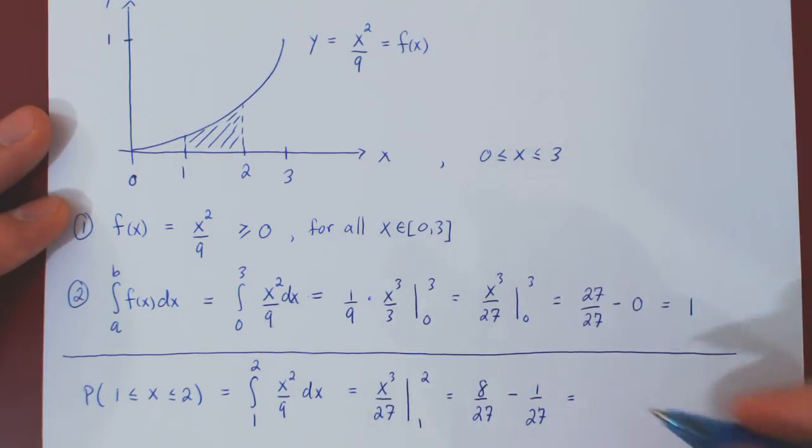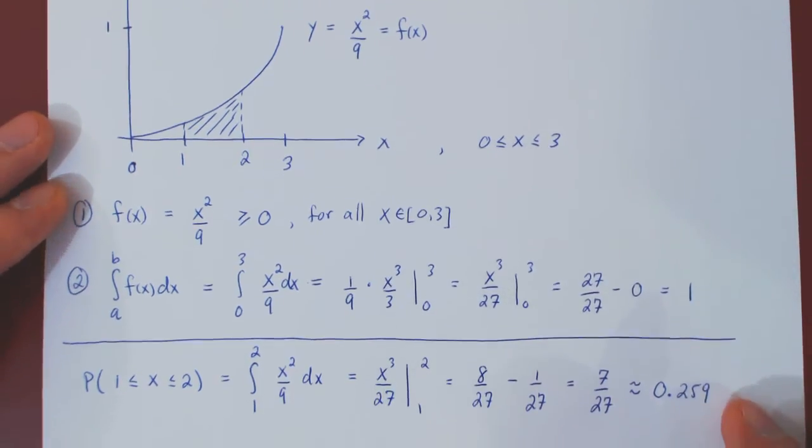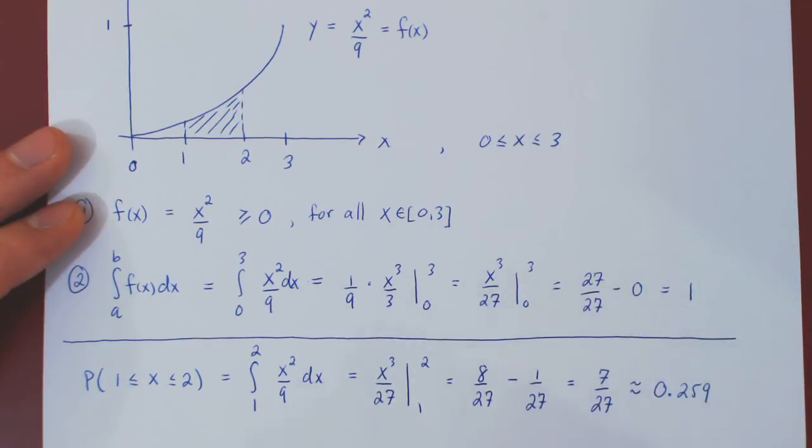8 minus 1 is 7. So we get 7 over 27. And in decimals, this is approximately 0.259. If you prefer in percentage, this is about 26%.